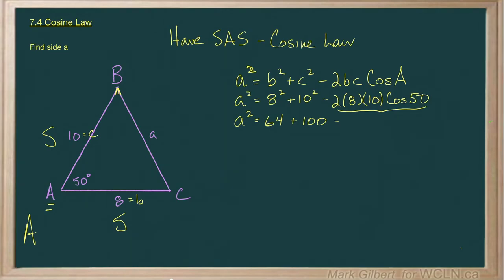I'll do it here on my calculator. 2 times 8 times 10 times the cosine of 50 degrees. And I get 102.846.